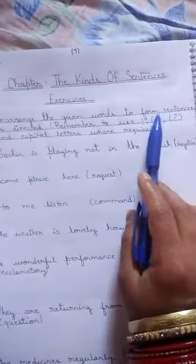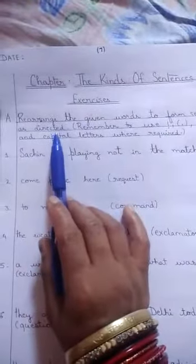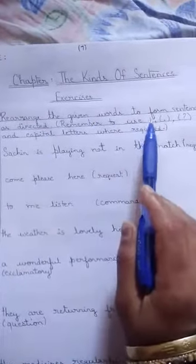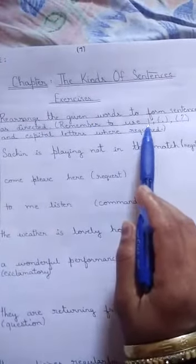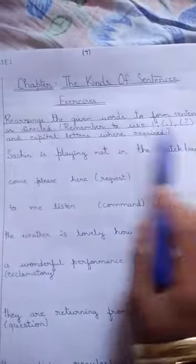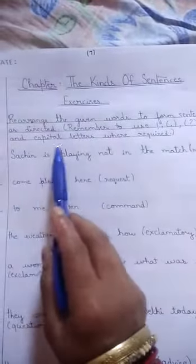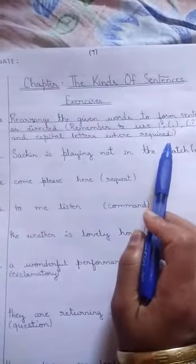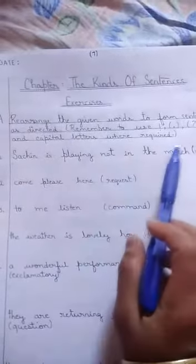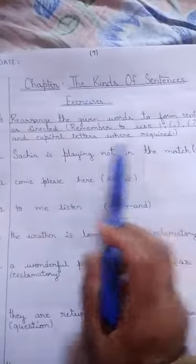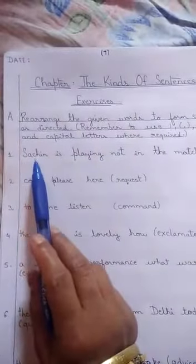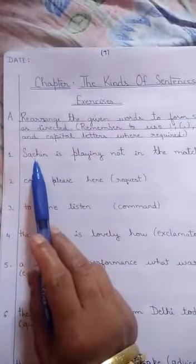Exercise A. Rearrange the given group of words to form sentences as directed. Remember to use exclamation mark, full stop, question mark, and capital letters where required. I hope you have read the instructions. Let us do the first sentence.